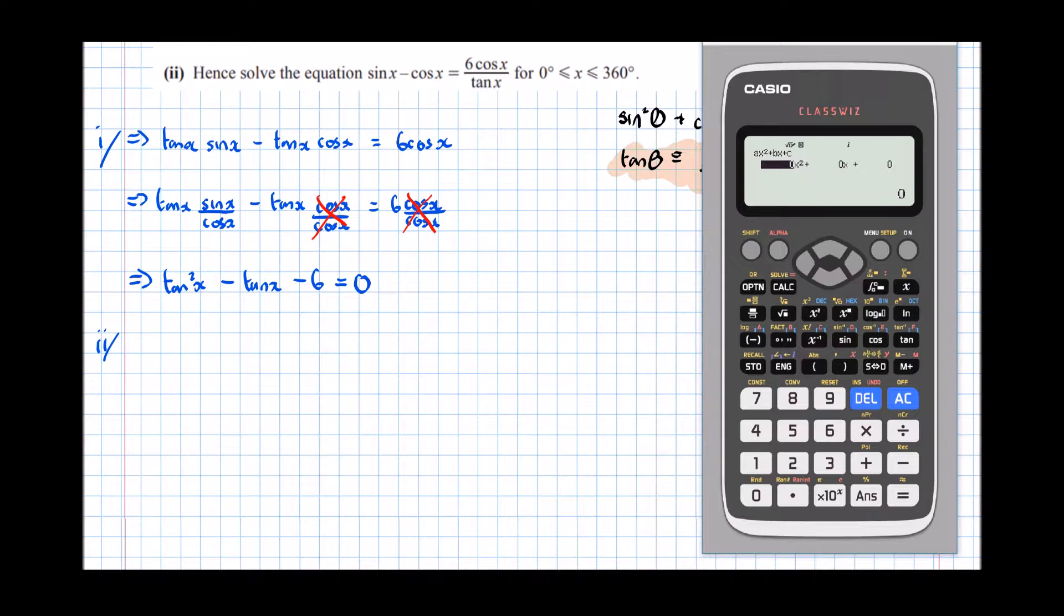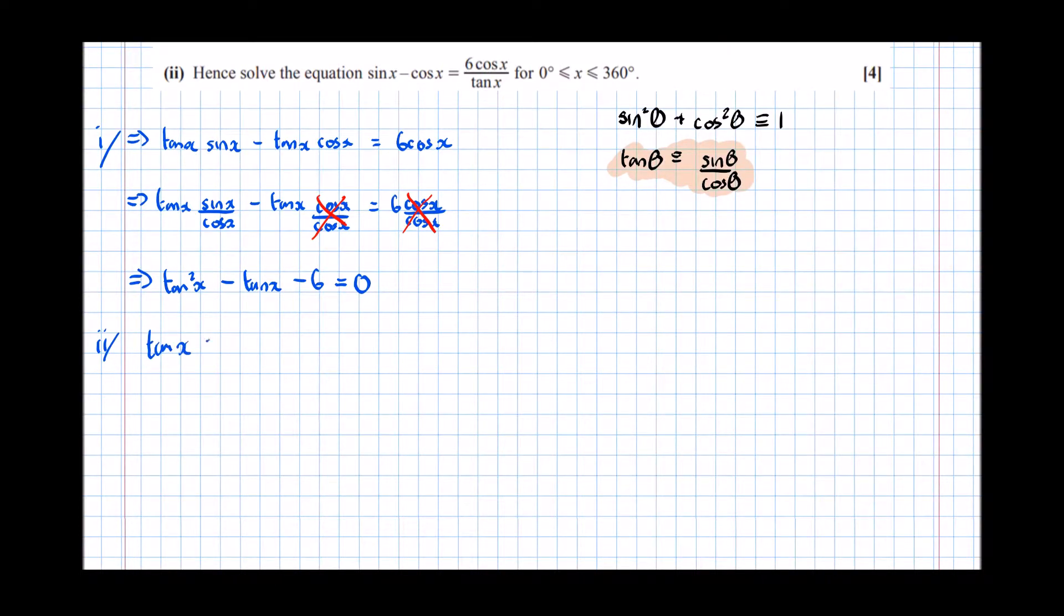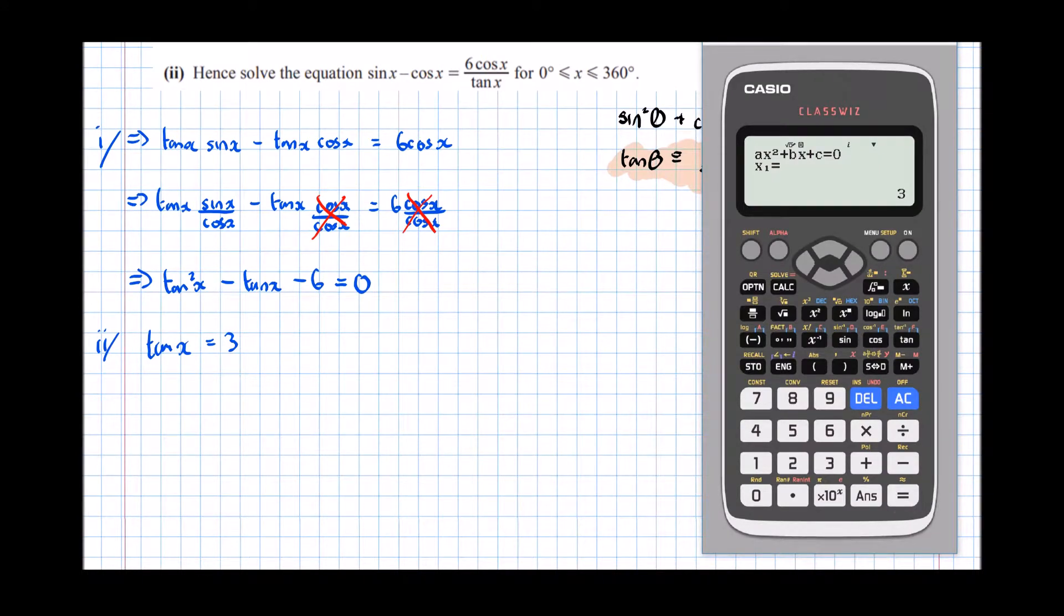So 1 tan squared x, and I've got minus 1 tan x, and minus 6 the constant term. Which gives me tan x equals 3. And pressing equals again, tan x equals minus 2.